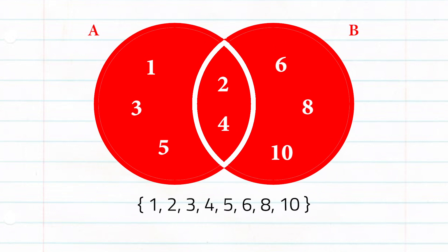The union or combination of all the elements is represented by this portion of the Venn diagram. Listing them down, we get the elements 1, 2, 3, 4, 5, 6, 8, and 10, which makes up the union of sets A and B. The union of sets is symbolized by a U.